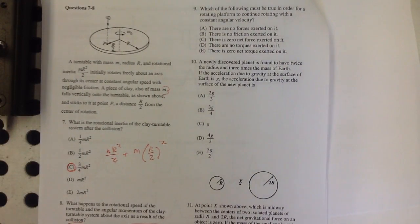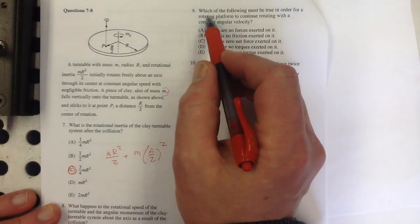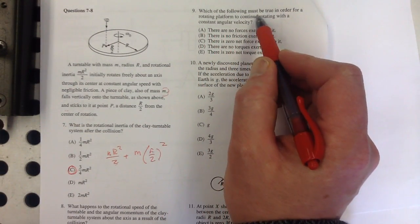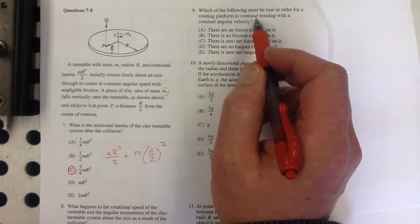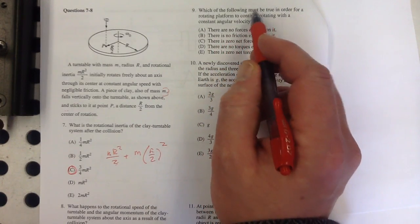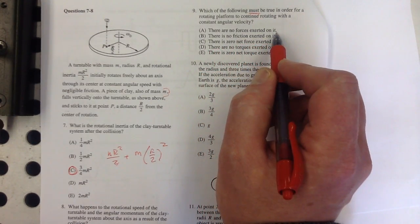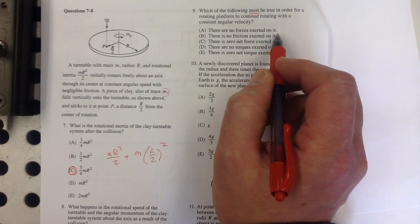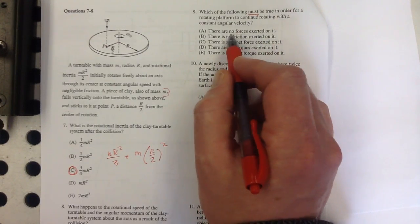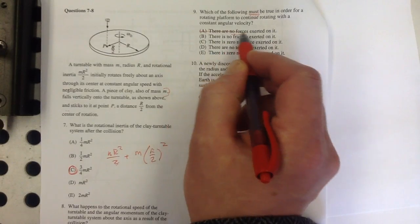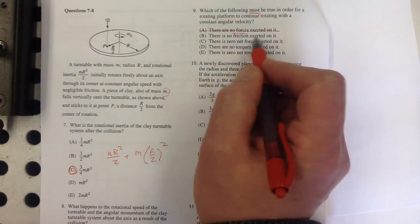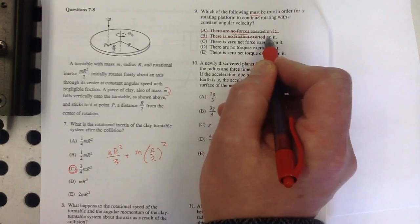Number nine. Which of the following must be true in order for a rotating platform to continue rotating with a constant angular velocity? Let me read that again. Which of the following must be true in order for a rotating platform to continue rotating with a constant angular velocity? There are no forces exerted on it? That does not need to be true because there could be balanced torques that could include several forces. There's no friction? No, you could have a force that overcomes friction or torque.